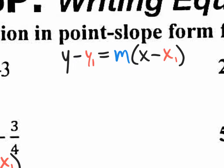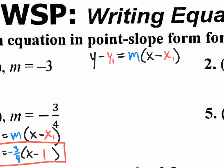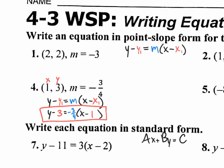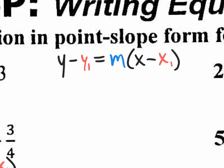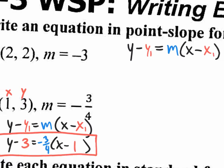Point-slope form is y minus y1 equals m parenthesis x minus x1. The best way to use point-slope form is to rewrite what's in black — leave the y1 blank, the m blank, and the x1 blank, and then plug in your values.